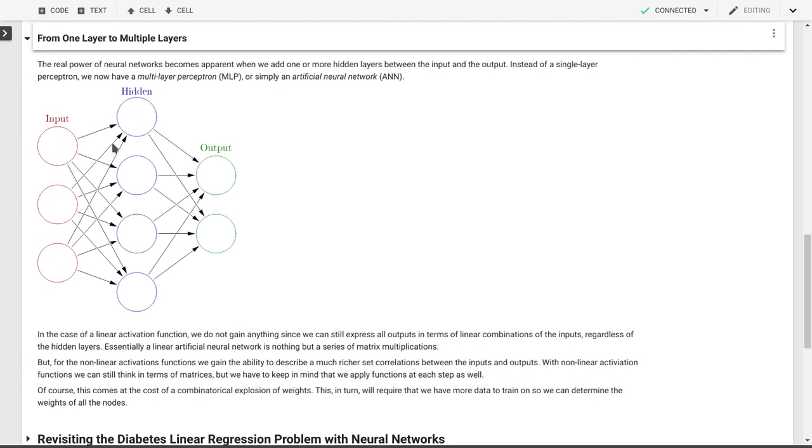We'd have three times four different weights in this initial layer going from layer zero to layer one. For each of the hidden layer perceptrons or hidden layer neurons, we would get one bias. Then going from the hidden layer to the output layer, we'd have four times two, so eight different weights and two different biases. This increases the number of weights and biases that we have to determine, and that will require that we have more training data to work with, so that we can actually determine the weights of all of those nodes appropriately, the weight of the connection between the nodes.